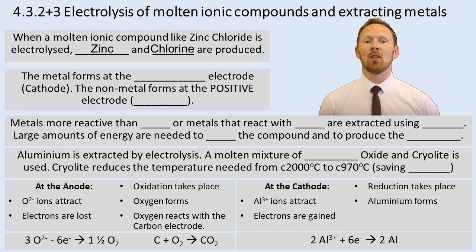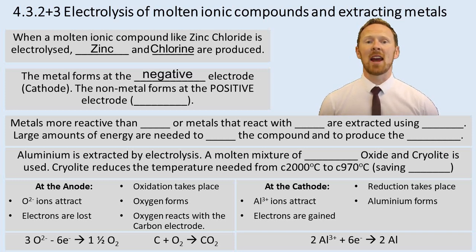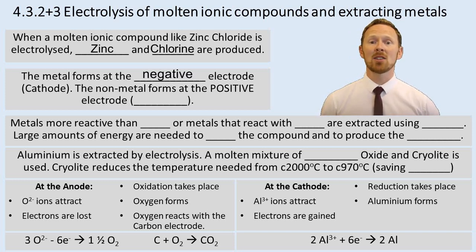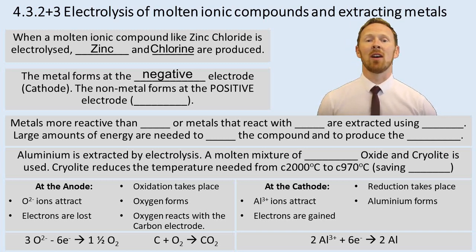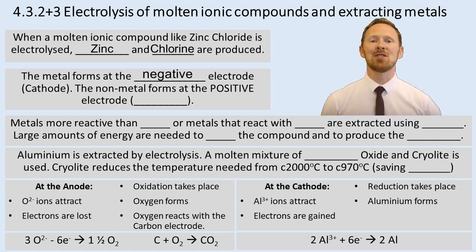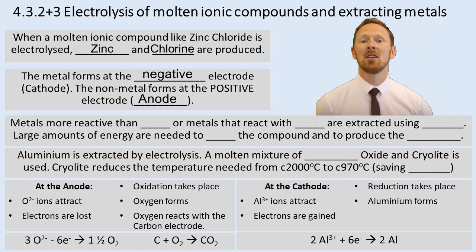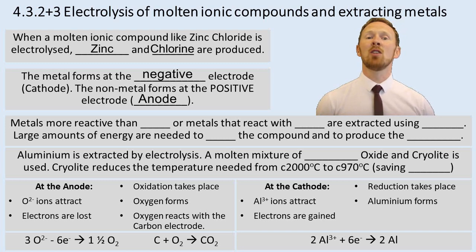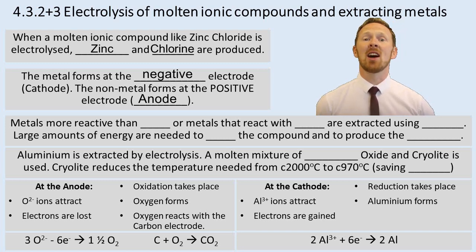The metal forms at the negative electrode, called the cathode. That's because the metal ions are positively charged, so they're attracted to the negative electrode. The non-metal forms at the positive electrode, called the anode.